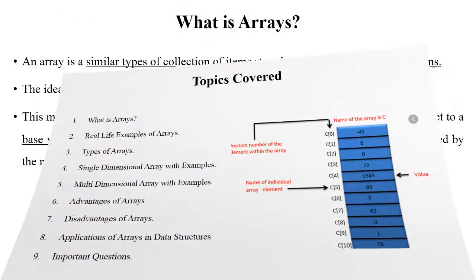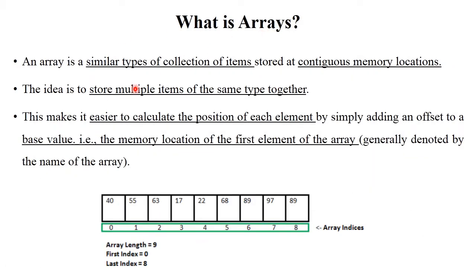What is meant by array? Array simply means similar types of collections of items, and these items are stored in contiguous memory locations. The idea of array is to store multiple items of the same type together. This makes it easy to calculate the position of each element by simply adding an offset, that is the base value. Base value means the memory location of the first element of that array. In this diagram, this is the structure of array. First index is 0 and last index is 8. Array length is 9. Array always starts with 0. These indices are called array indices and the stored elements are called array elements.